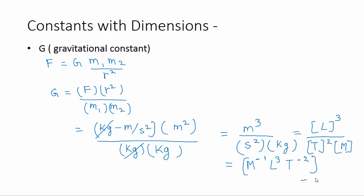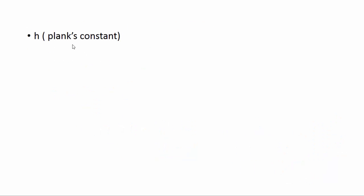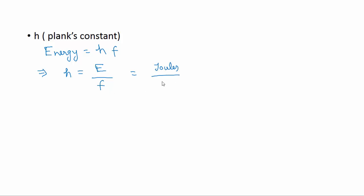For Planck's constant h, we use the formula: energy E = h·ν, where ν is frequency. Rearranging: h = E / ν. The unit of energy is joule, but to find dimensions we need base units, so energy is written as kg·m²/s². For frequency, the unit is cycles per second (hertz).